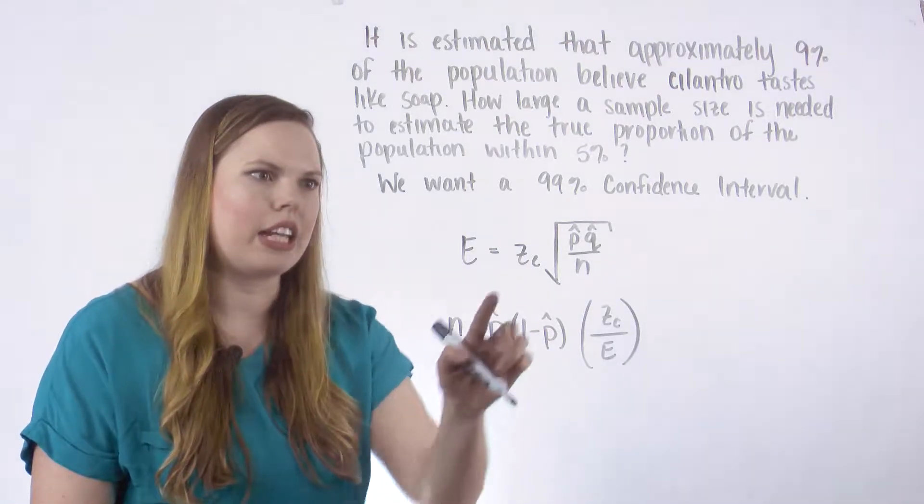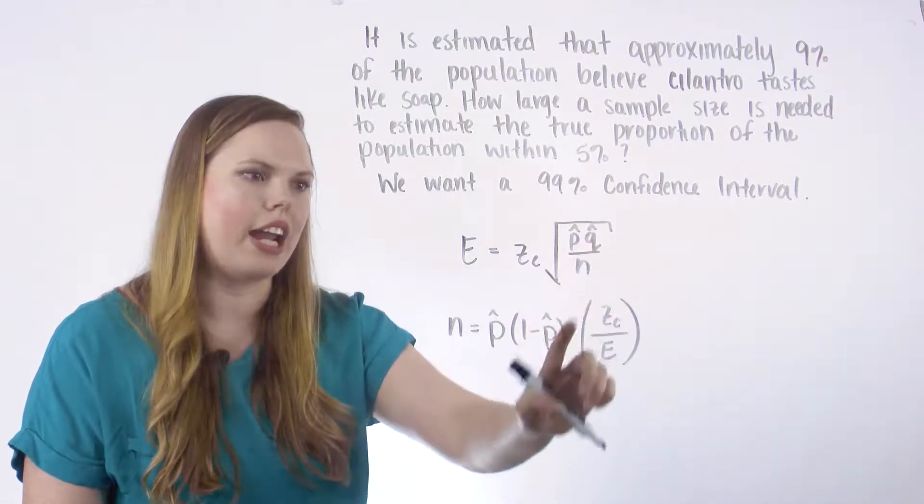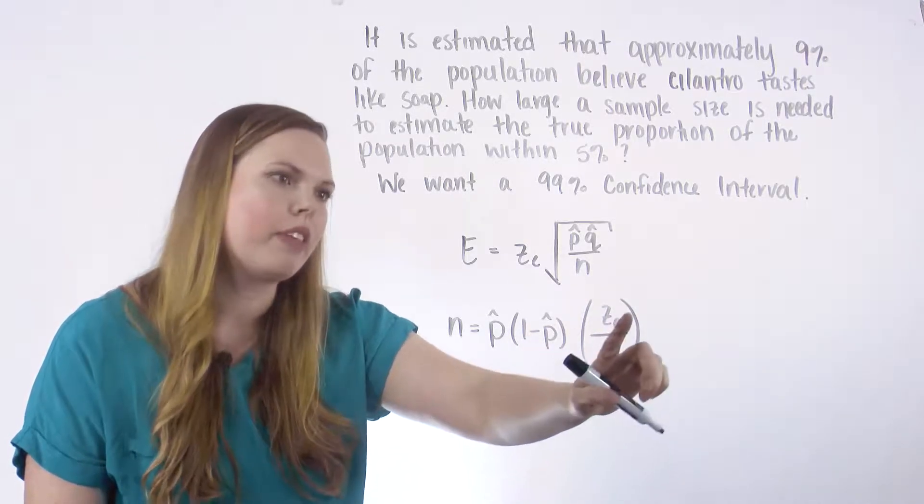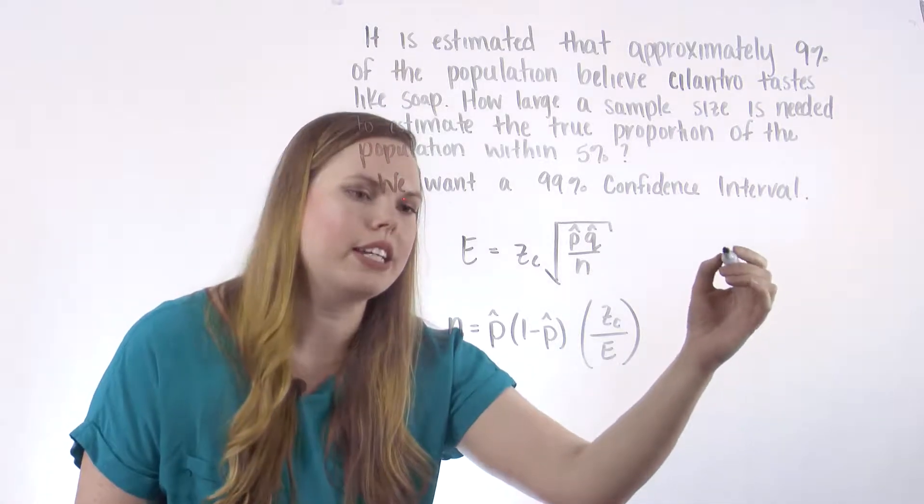So let's just plug in the things that we need. We need a z sub c, a p hat, a q hat, or we'll do 1 minus p hat for q hat, a z sub c and an e. So let's plug things in.